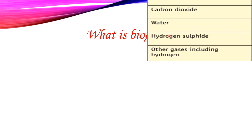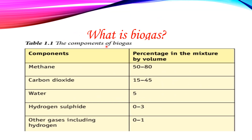The components of biogas: methane is about 50% of the mixture. Carbon dioxide is about 45%. Water is about 5%, hydrogen sulphide is about 10%, and other gases including hydrogen are about 1%.